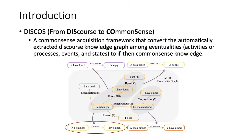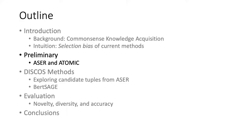With this intuition, we leverage such a discourse knowledge graph as candidate common sense knowledge, and train a discriminator using the high-quality human-annotated common sense resource Atomic, and then discriminate the edges in Acer to acquire a much larger and more diverse common sense knowledge resource.